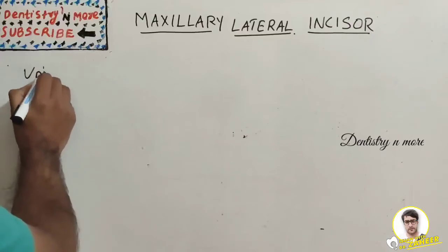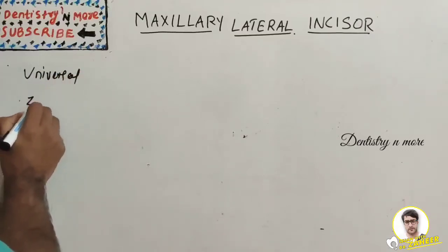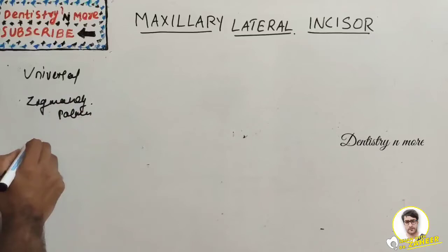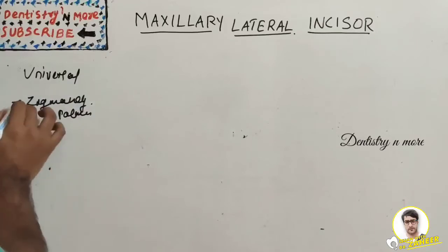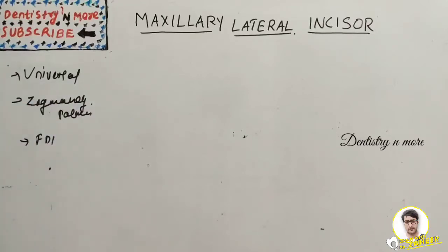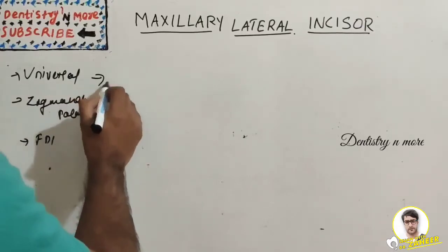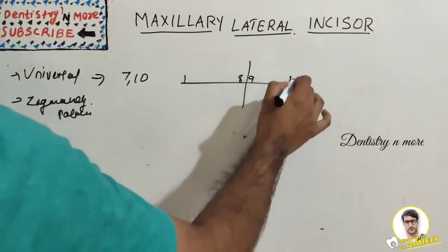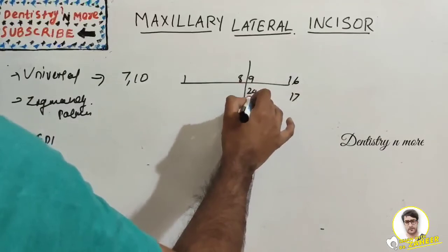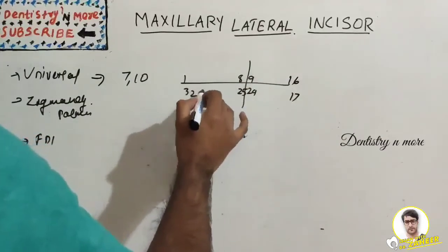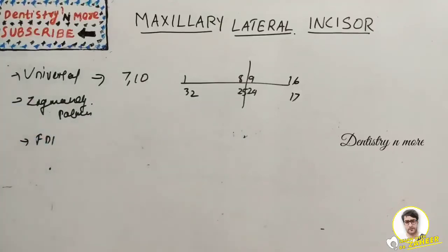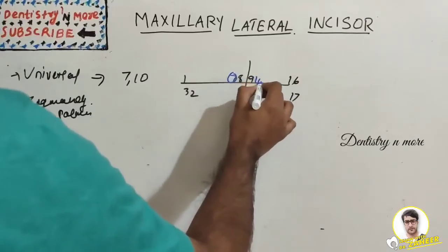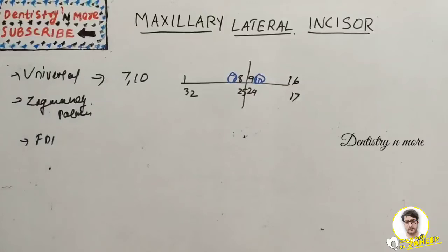The lateral incisor supplements the central incisor in function and is similar anatomically. For tooth numbering, we have three systems as we learned in our last session: the Universal system, the Zsigmondy-Palmer system, and the accepted FDI system. By now I hope you are well versed with these systems. The lateral incisor is numbered seven and ten in the Universal system.